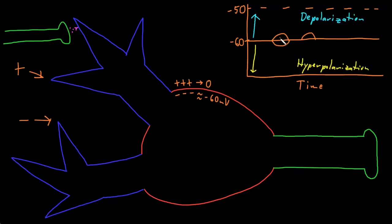But if two depolarizations happen right around the same time, their effects can add together — they have additive effects and you can get a depolarization twice the size. We call this process temporal summation, or the adding together of graded potentials in time.